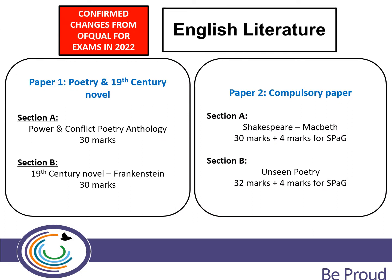The new format for the literature exams is: Paper Two will be the compulsory paper with Macbeth and unseen poetry, and Paper One becomes the options paper, which will cover the Power and Conflict poetry and Frankenstein.